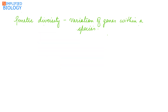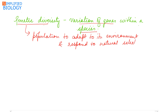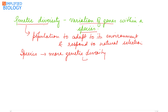Genetic diversity is variations of genes within a species. It could be an allele, an entire gene, or even a chromosome. Genetic diversity enables a population to adapt to its environment and respond to natural selection. Species with more genetic diversity can adapt better to changed environmental conditions.